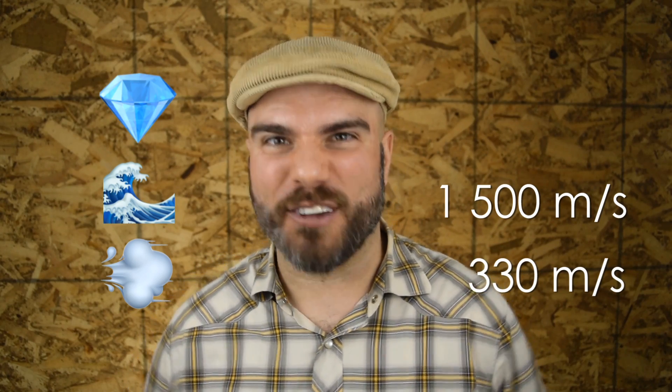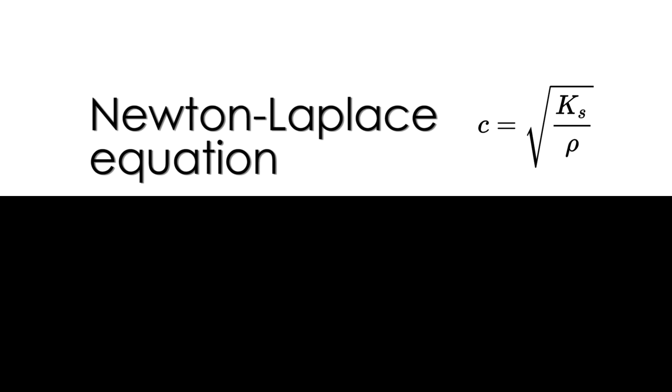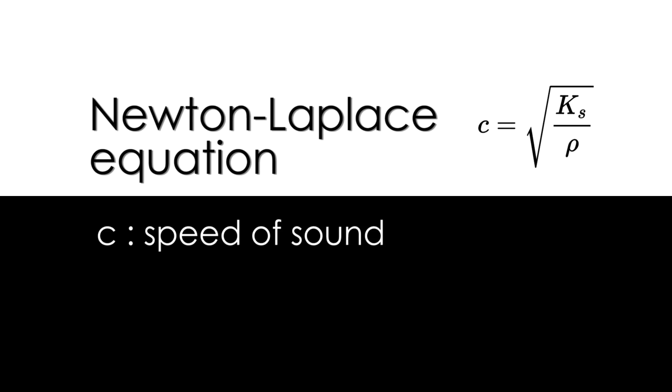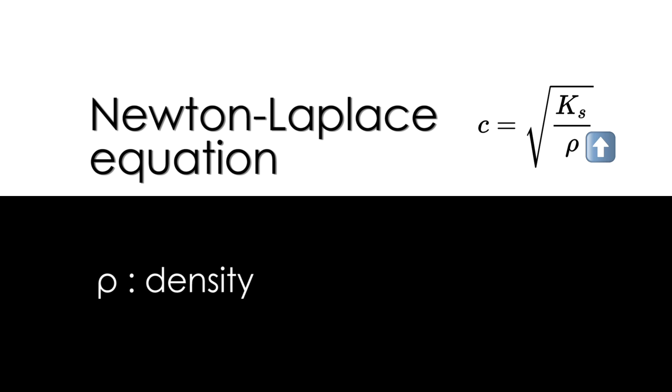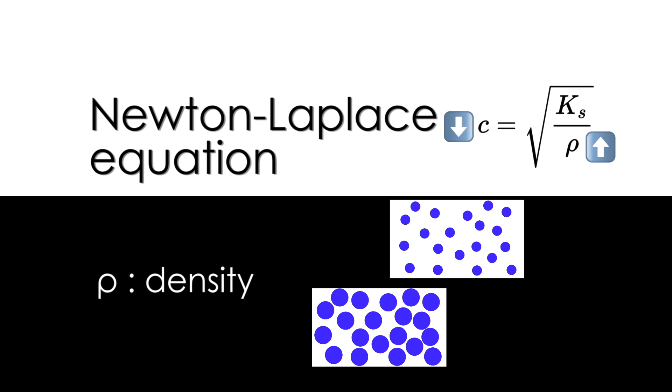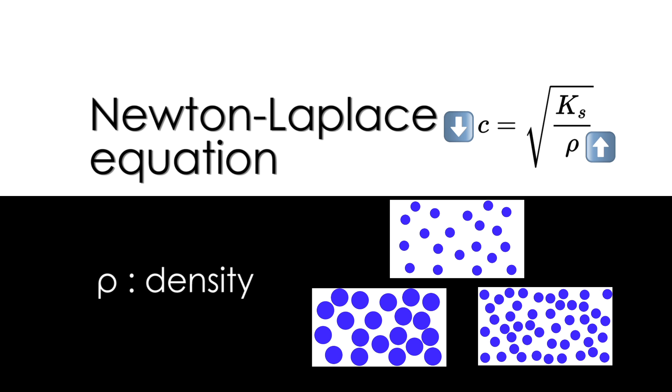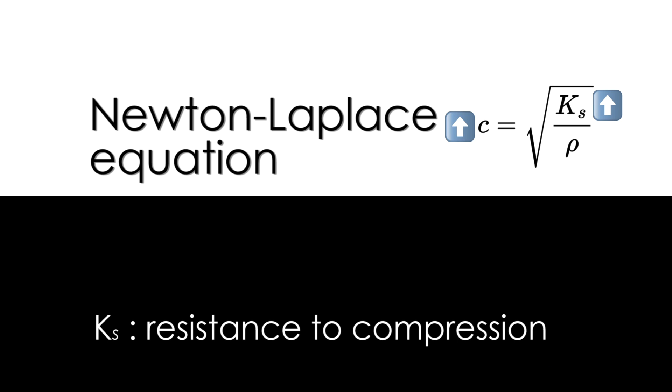Ultimately what matters is for sound to travel from source to receiver through some sort of medium. Sound through air travels at around 330 meters per second. Through seawater, the speed of sound is about 1,500 meters per second. And through diamond, the speed of sound shoots up to 12,000 meters per second. The Newton-Laplace equation is a common formula used to calculate the speed of sound through different materials — rho is the density of the material, and Ks is its resistance to compression. The higher the density, the slower the speed, since the atoms and molecules are either heavier to move around or there's more of them per unit of distance. And the more resistant to compression a material is, the higher the speed — because the more a material is like rubber instead of crystal, the more time the sound waves are wasting compressing the material instead of just traveling straight through.